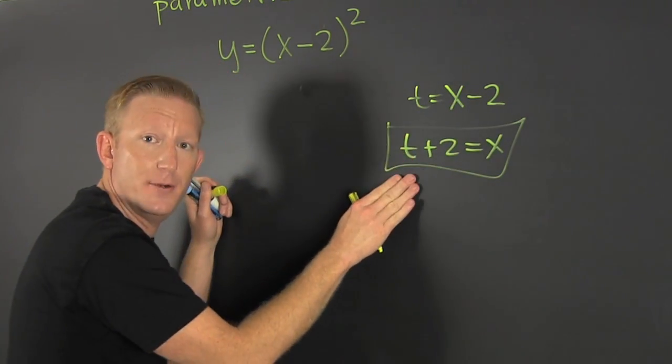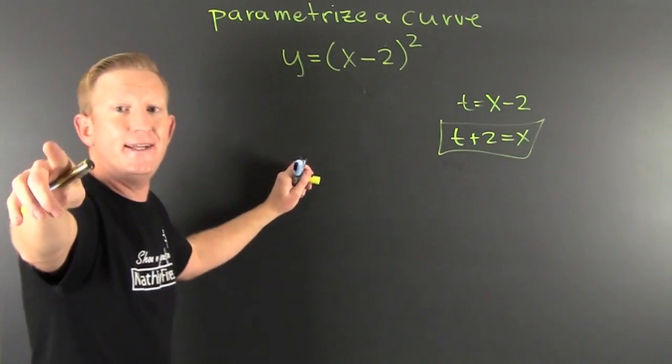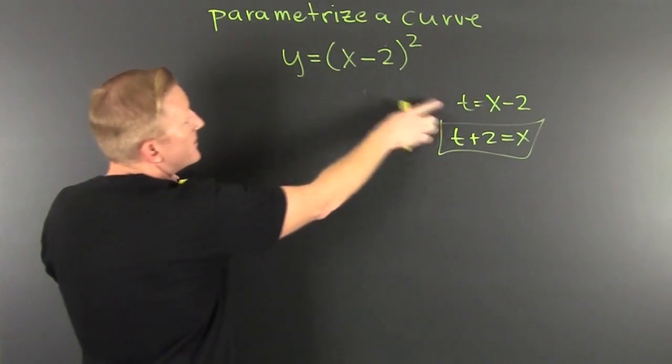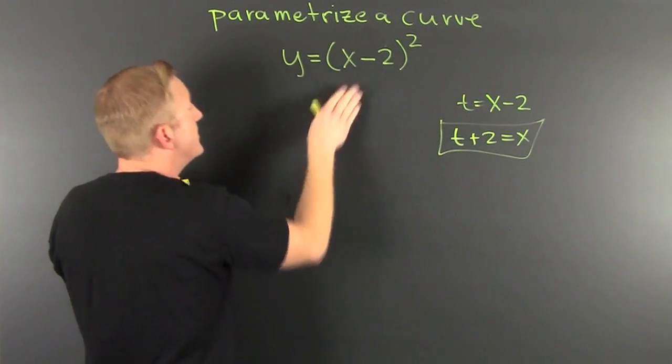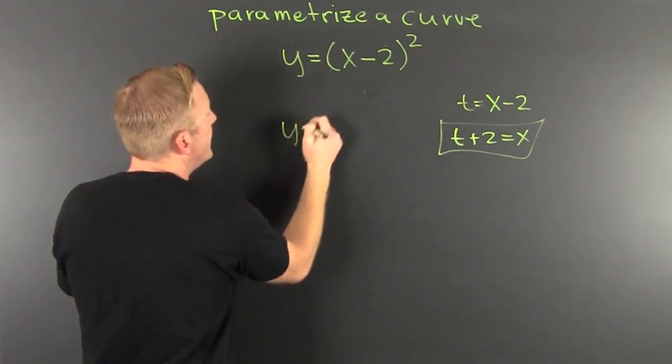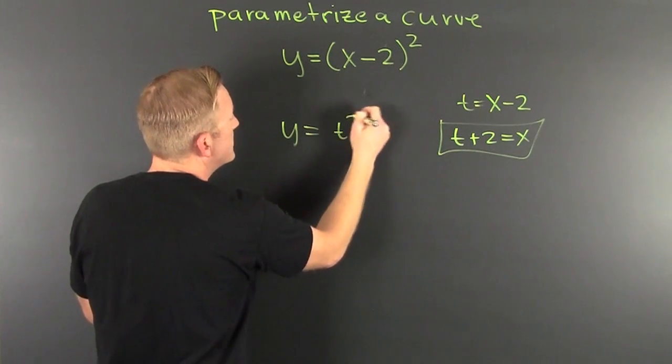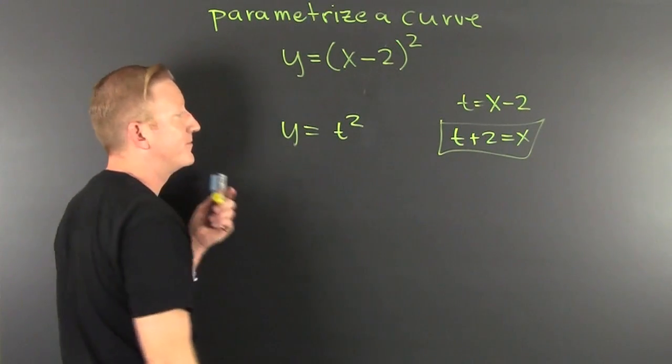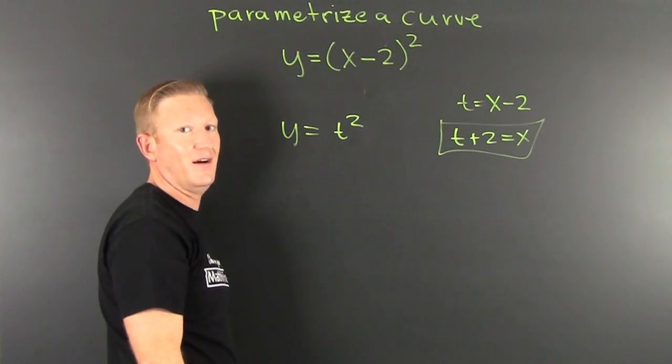What's that? That's one of your parametric curves. How are you going to get the other one? Well, if T is X minus 2, then Y is T squared. And really, that's all.